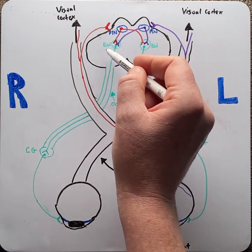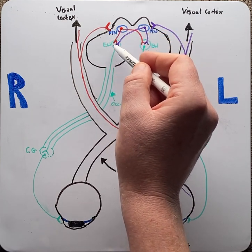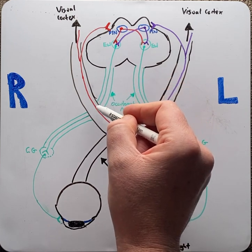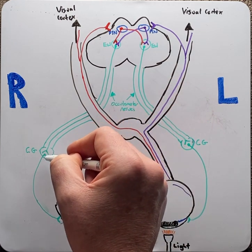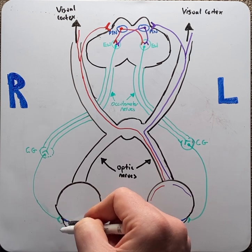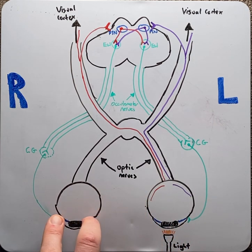we will also have activation of the right Edinger-Westphal, which means we'll also have activation of the right oculomotor nerve, which will also activate the iris sphincter on the right side and cause pupil constriction on the right eye, which is the consensual response.